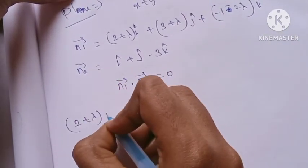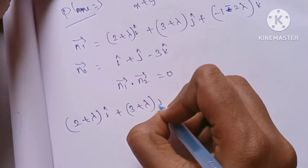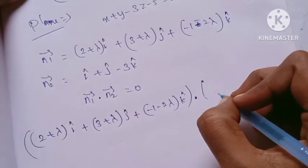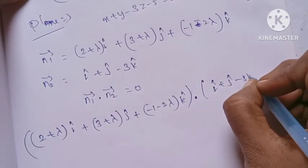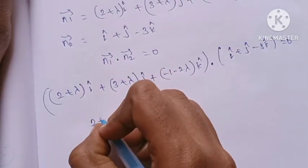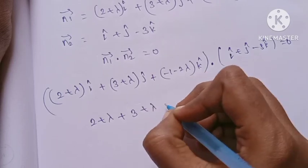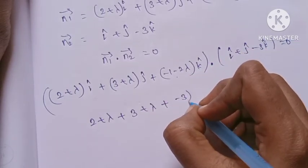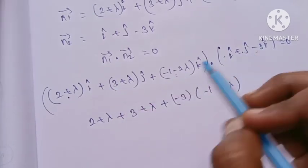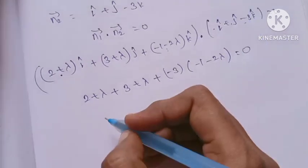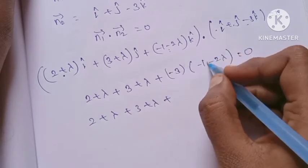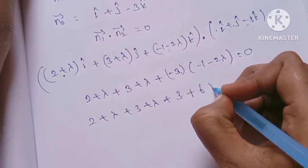Expanding: (2 plus lambda) times 1, plus (3 plus lambda) times 1, plus (minus 1 minus 2 lambda) times (minus 3) equals 0. This gives: 2 plus lambda plus 3 plus lambda plus 3 plus 6 lambda equals 0, which simplifies to 8 lambda plus 8 equals 0, so 8 lambda equals minus 8, therefore lambda equals minus 1.